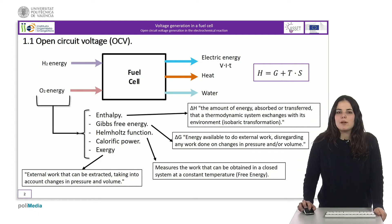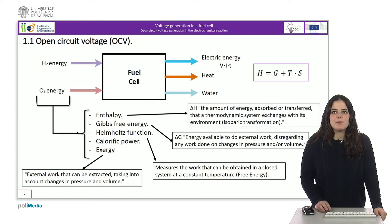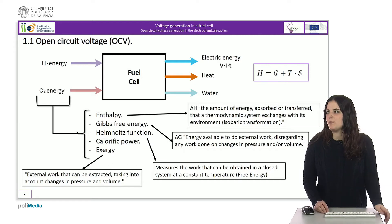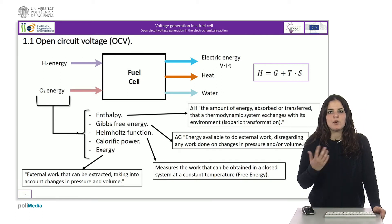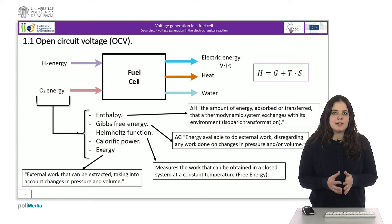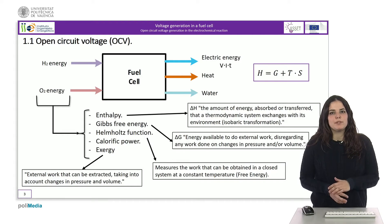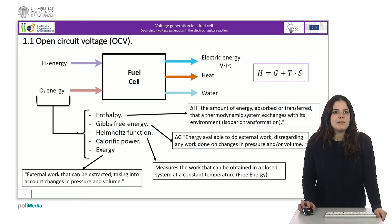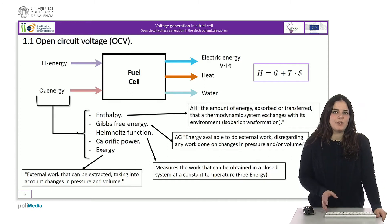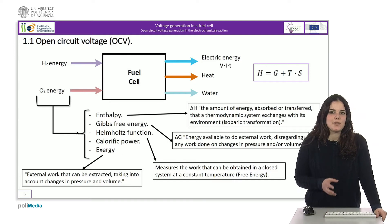When a chemical reaction takes place, the enthalpy of the system changes, so there is an increase in enthalpy. This change in enthalpy can be associated with heat release or absorption, which is defined as the product of the temperature times the variation of the entropy. If the heat is positive, the reaction is exothermic. If the heat is negative, the reaction is endothermic.